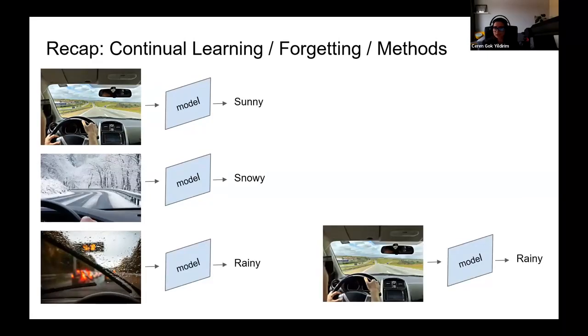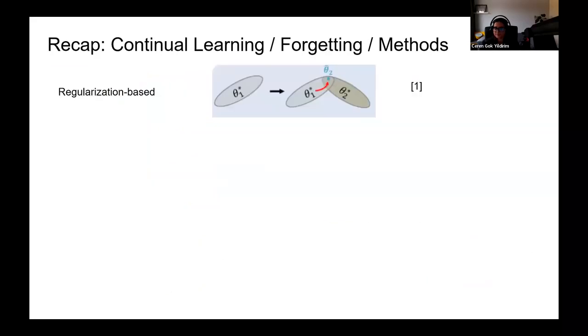Similar to how we might forget details of a subject we haven't revisited in a while, in continual learning, models may struggle to remember the earlier learned tasks when focusing on the new ones. Extensive research has been conducted and there is still a large ongoing effort to address the challenge of catastrophic forgetting.